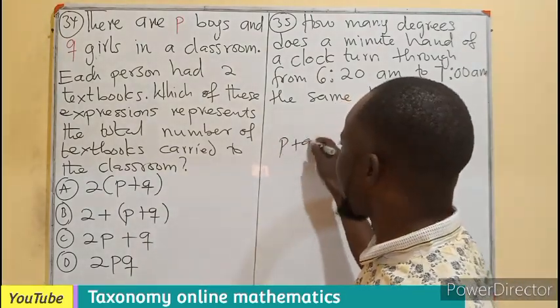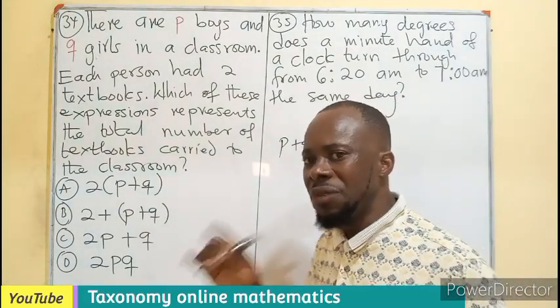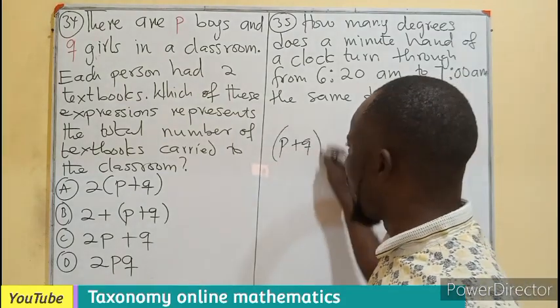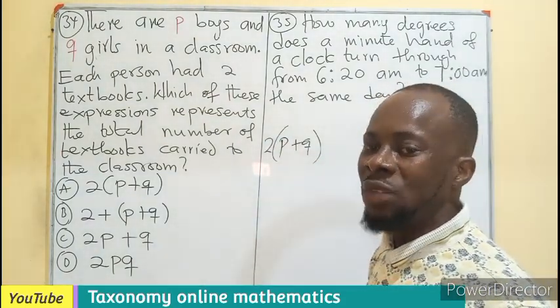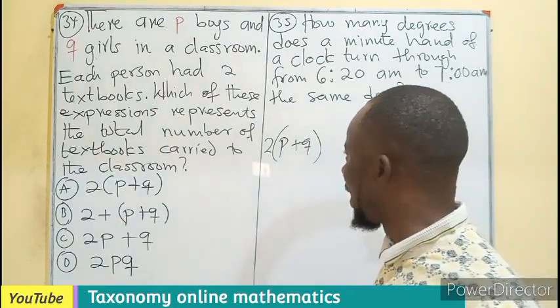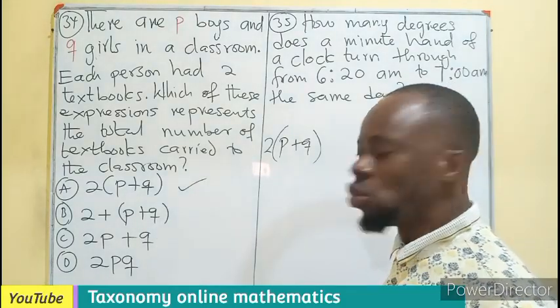I'll be having P plus Q meaning the total number of people in the class. So if each of them is taking two books, it means I'll multiply the total number of people by two in order to get the number of books being carried that day. In that case, option A gives us our answer.